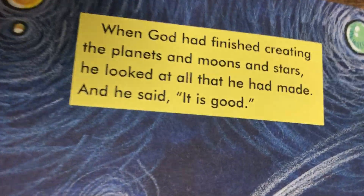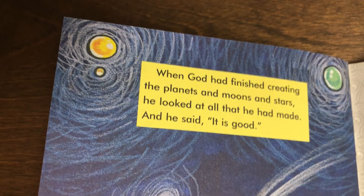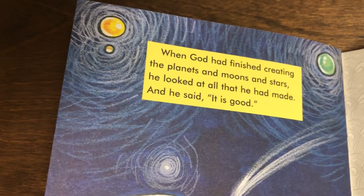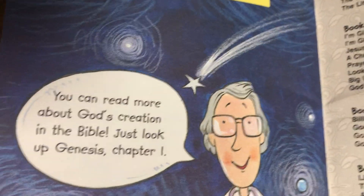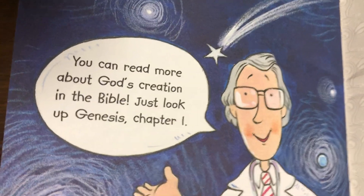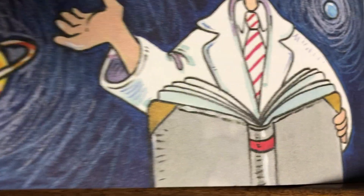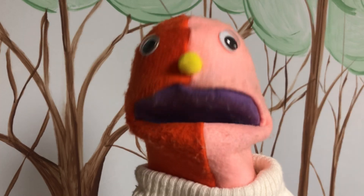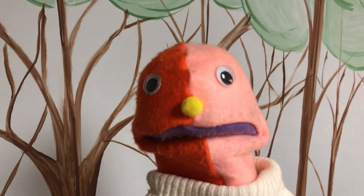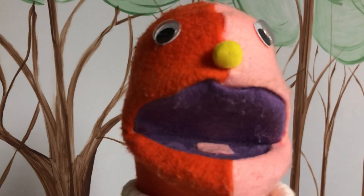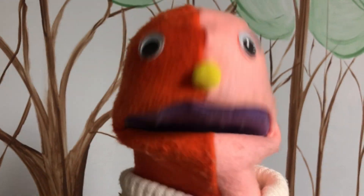When God was finished creating the planets, moon, and stars, he looked at all that he had made and he said, 'It is good.' You can read more about God's creation in the Bible — just look up Genesis chapter 1. And we know Genesis 1:1 says — say it with me — 'In the beginning God created the heavens and the earth.' Boys and girls, I love you and I'll see you next week. Bye-bye!